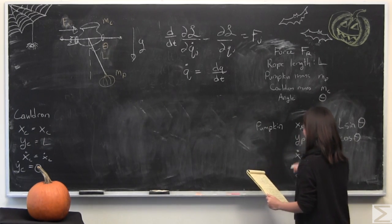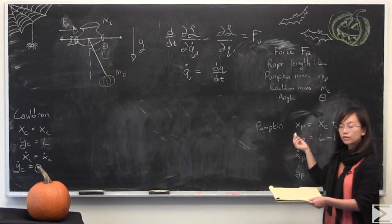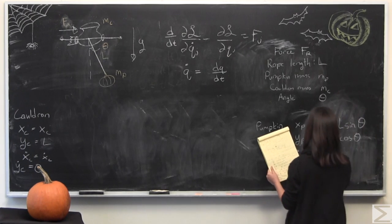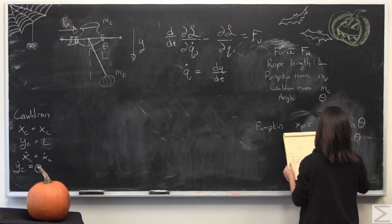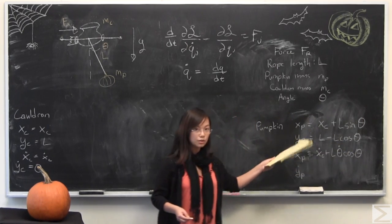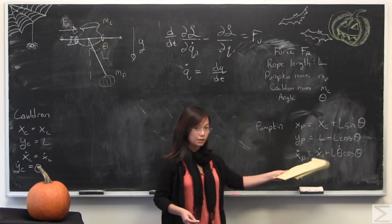Next, xp dot. That would be given by taking the total derivative of the x position with respect to time. Don't forget to take the chain rule, but it's very simple. By taking the derivative and making sure I took the chain rule, because it is the total derivative with respect to time, I get xc dot plus L theta dot cosine theta.